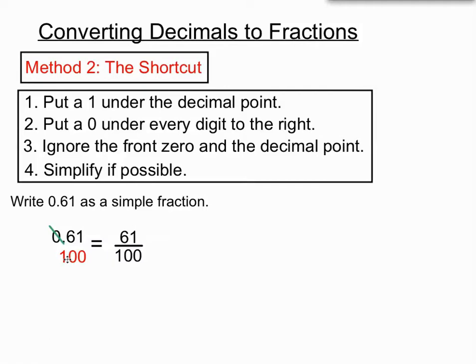Then we're going to ignore the 0 and the decimal point, and you can see there that we've almost formed our fraction. All we need is a fraction line there, so we get 61 over 100. It's almost as if we've created that 100 on the bottom just from the structure of the decimal that we started with, and it helps us because we don't have to really know what these columns are.